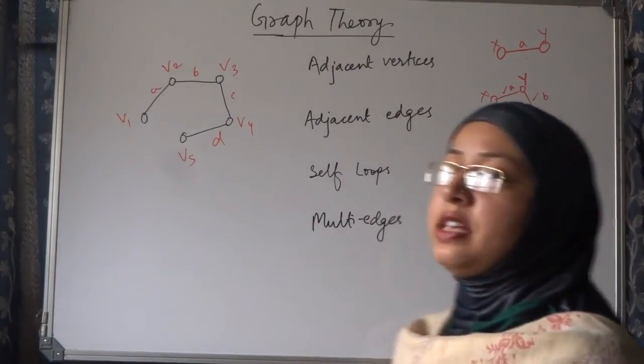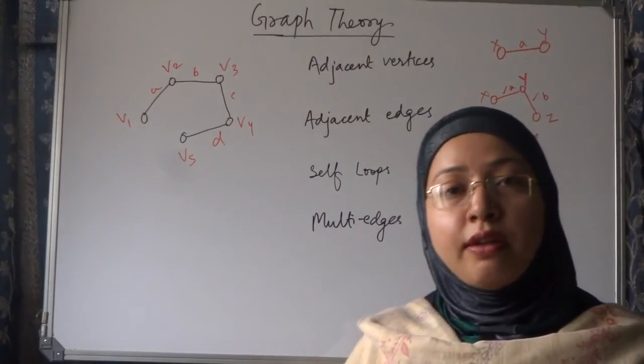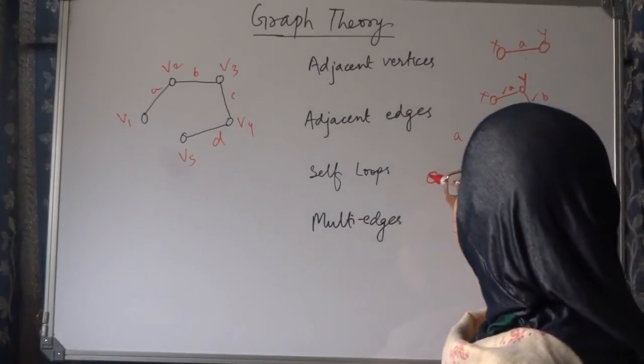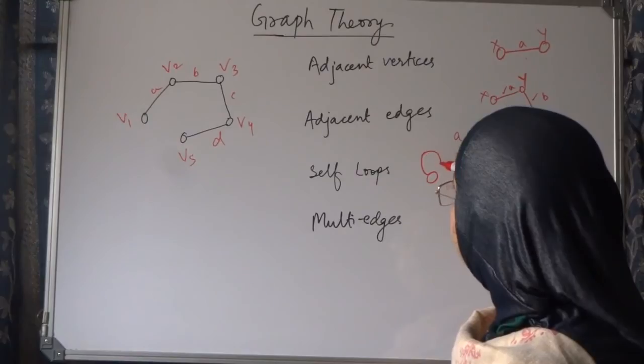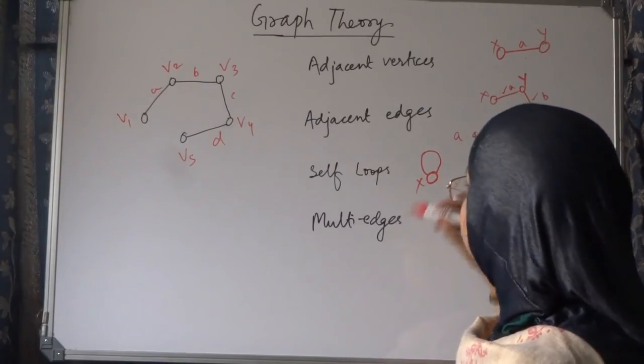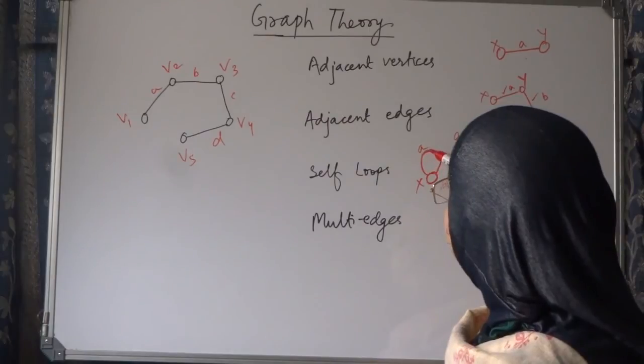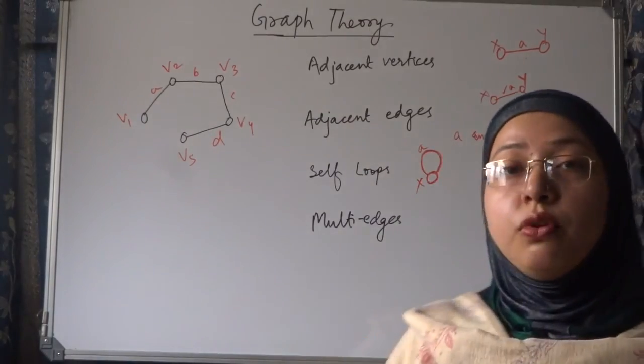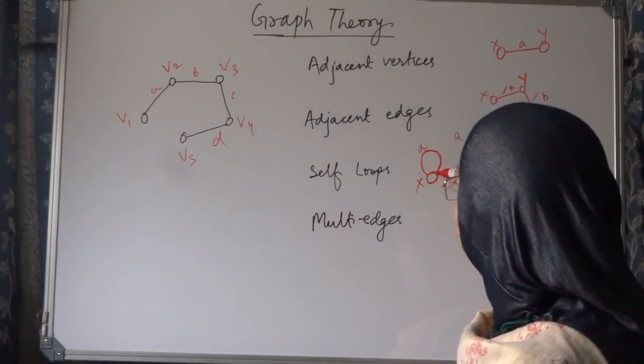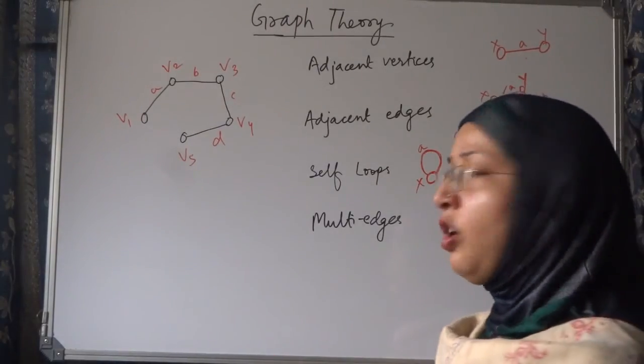Now, we see self-loop. Self-loop is what? When an edge comes out from a vertex and comes back again to the same node. This is node x, suppose, and this is edge a. When the edge comes back to the same node from where it has come out, then this edge is known as self-loop, or self-edge.